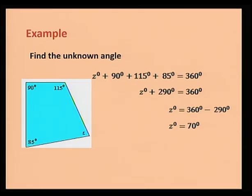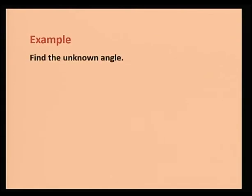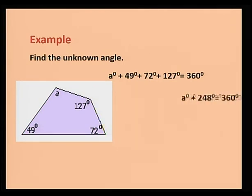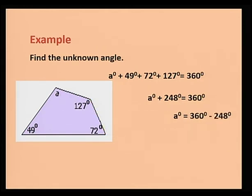Let's move on to another example. Here also, we need to find the unknown angle A. Adding the four angles, we have 360°. Here, A° + 248° = 360°. So, A° = 360° − 248° = 112°.